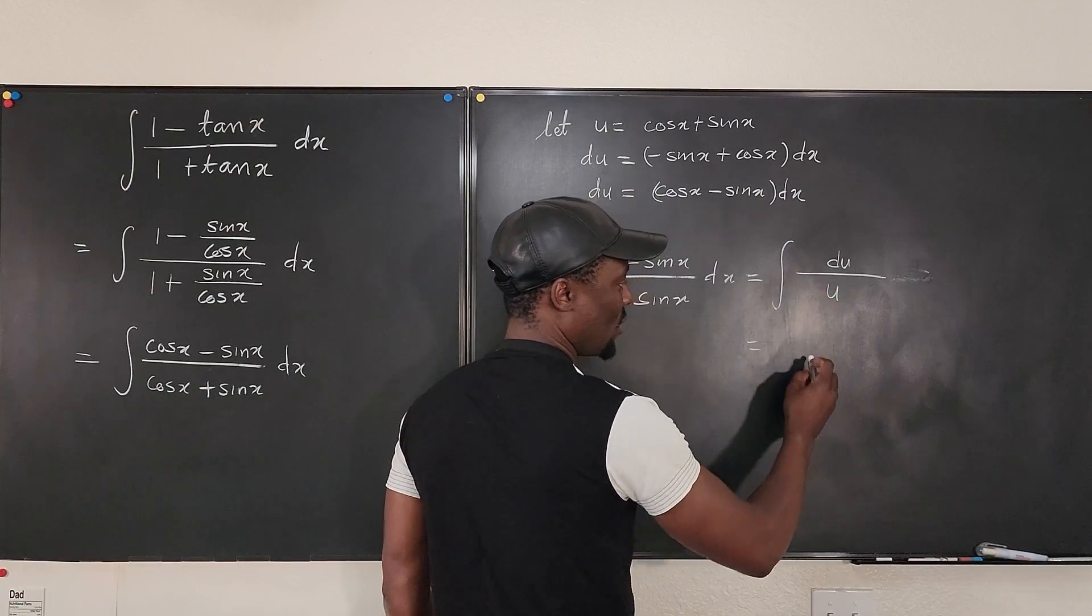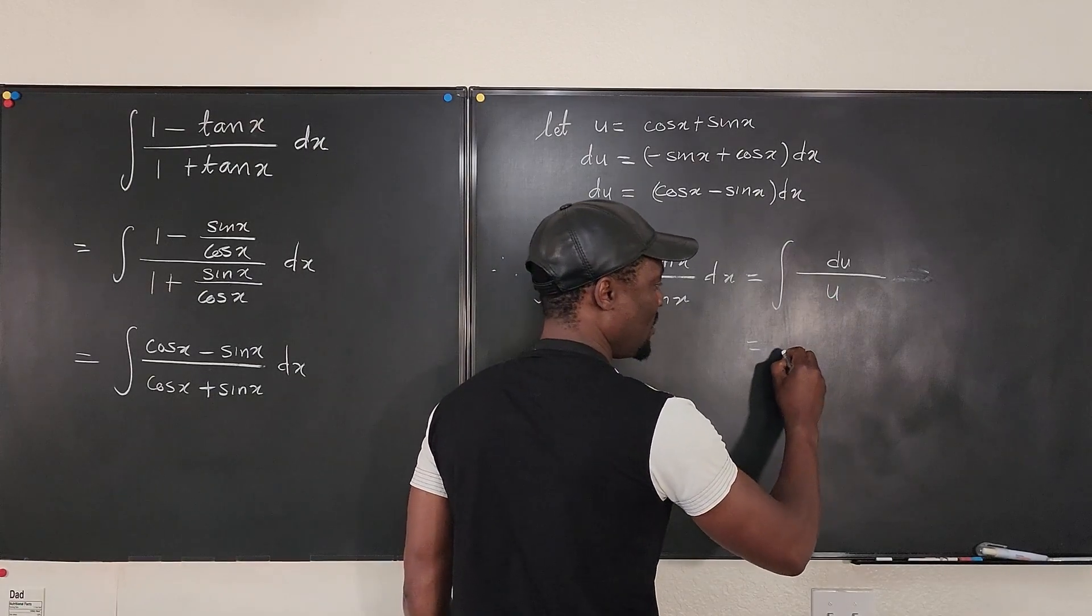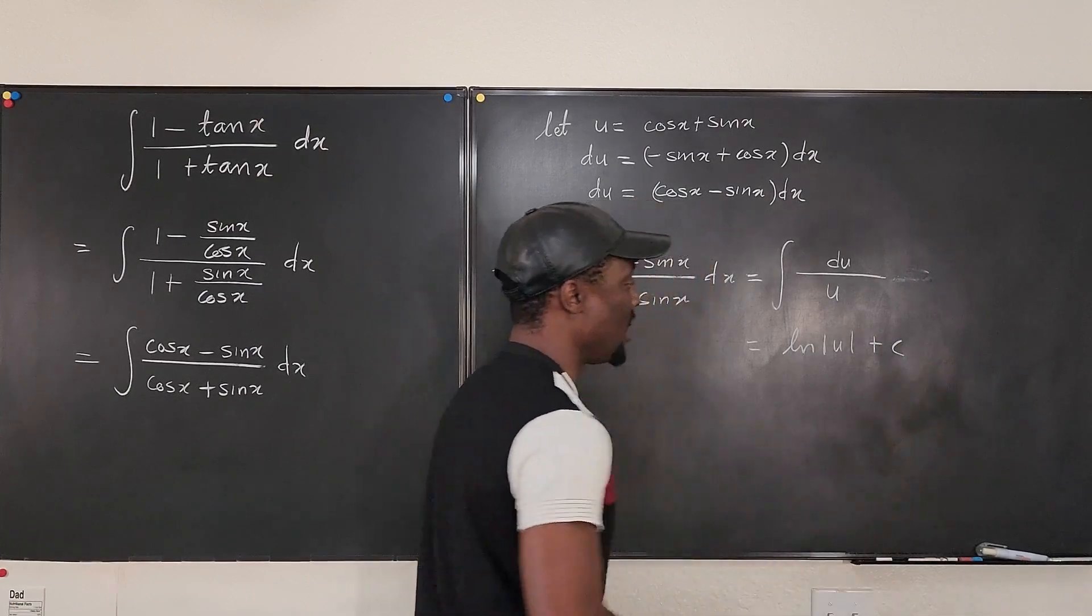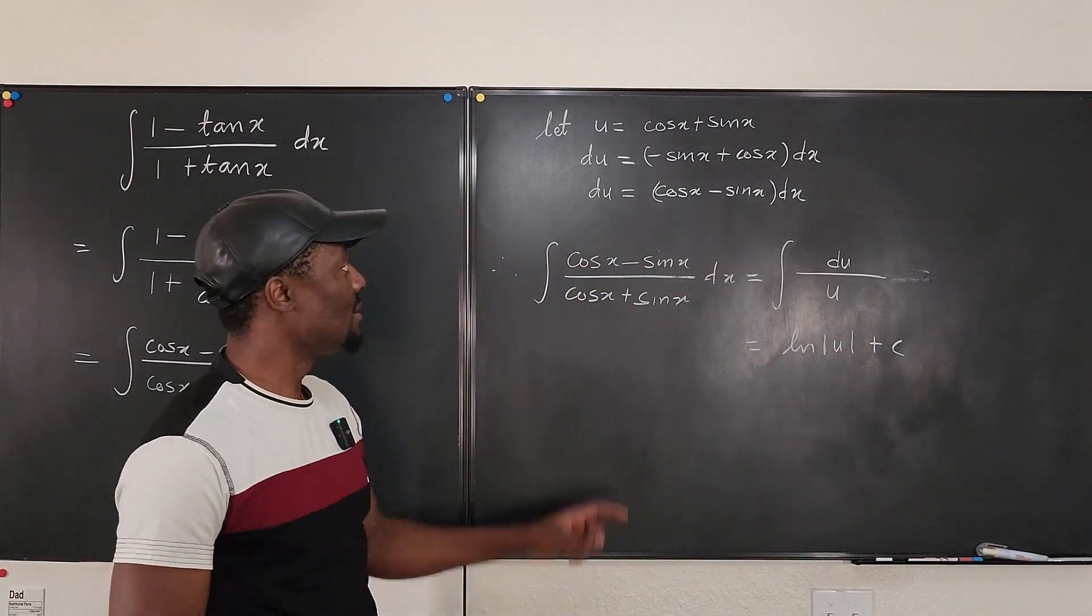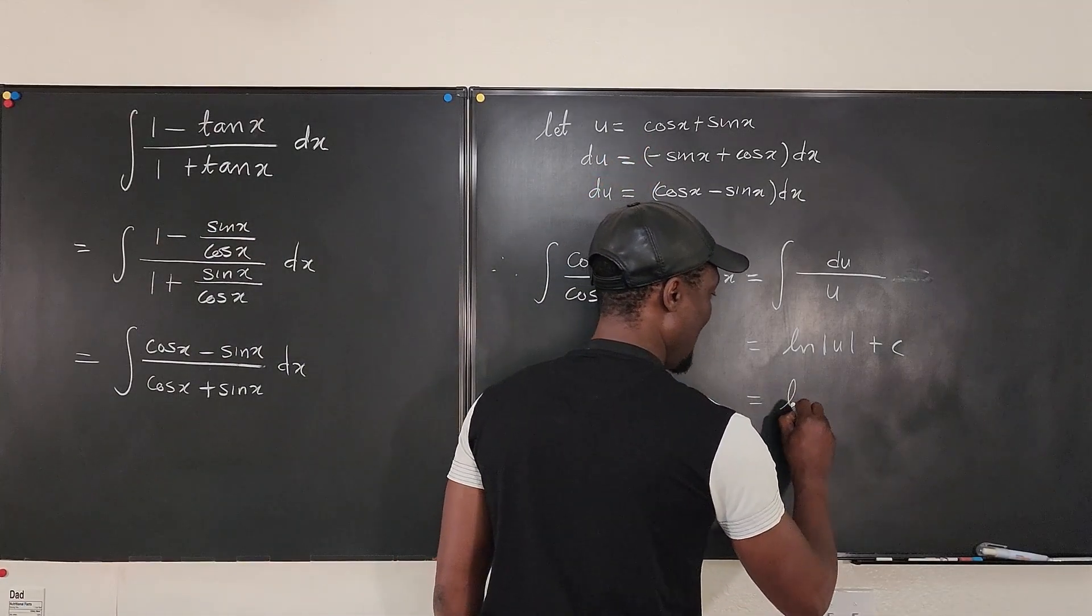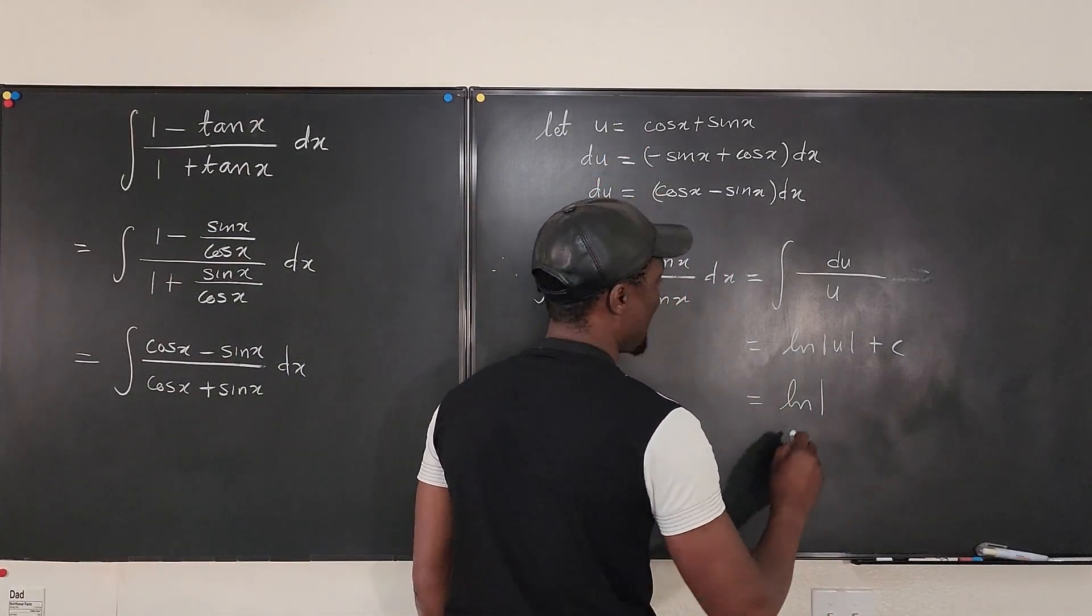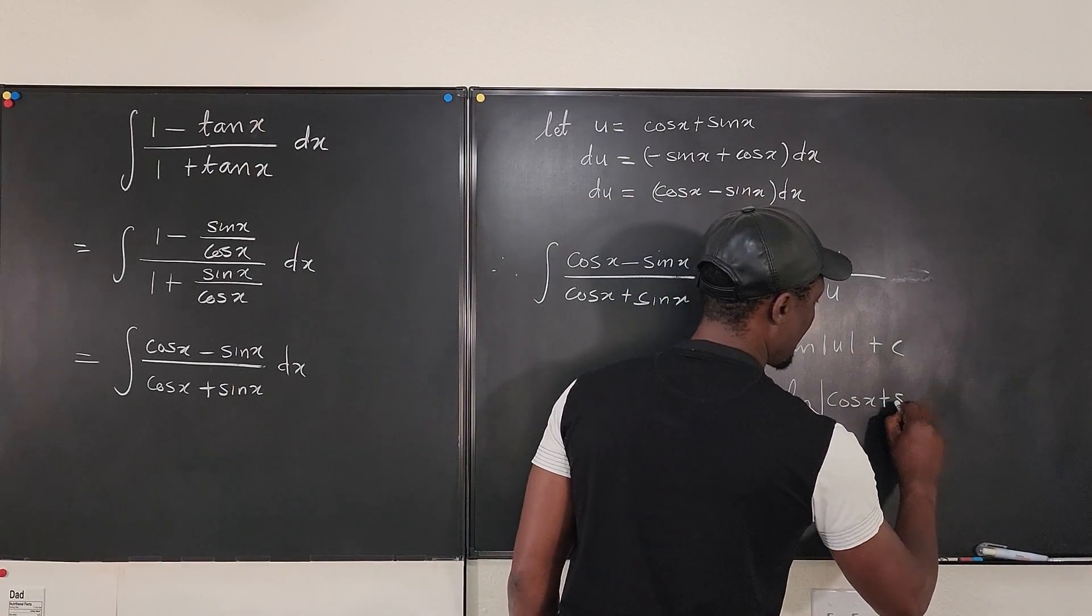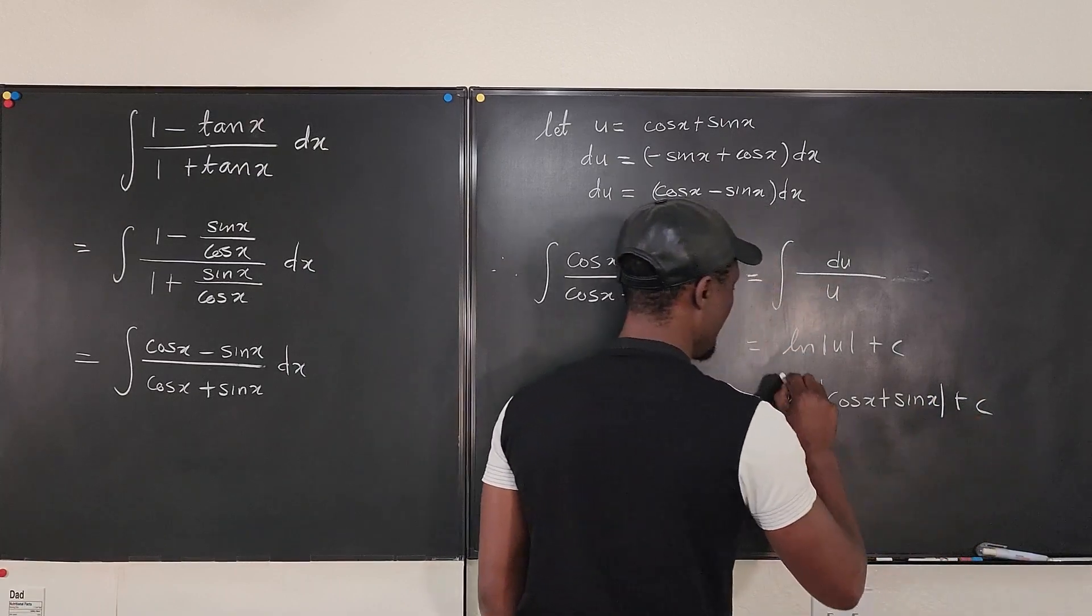If I integrate this, what do I have? I get the natural log of u. Natural log of the absolute value of u plus c. But I know that u is this. So I can say this is equal to the natural log of the absolute value of cosine x plus sine x plus c.